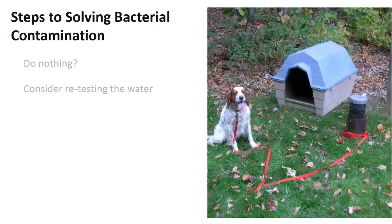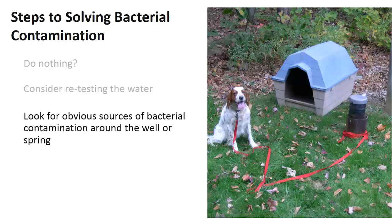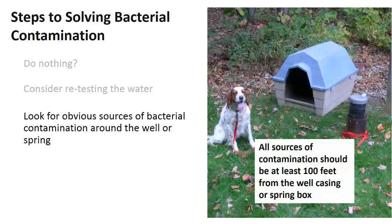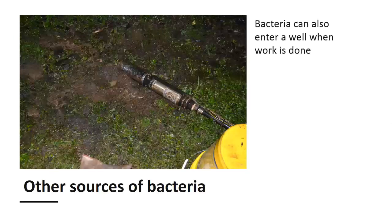Once you are confident in your water test results, the next step for solving the issue is to look for obvious sources of bacterial contamination around your well or spring. In this picture, a dog is tied to the well casing. All sources of contamination such as animals, septic systems, and runoff should be at least 100 feet from the well casing or spring box and preferably downhill. Bacteria can also enter a well when work is done to the well. In this picture, the submersible pump is laying on the yard where it can easily pick up bacteria and contaminate the well when the pump is installed.